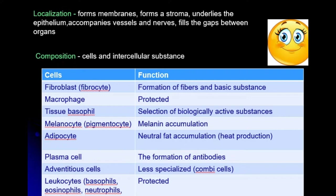Fixed cells are aboriginal cells — they originate here and spend their entire lifetime in the connective tissue, never migrating to other tissue types. They undergo differentiation and death here. They produce components for the extracellular matrix, such as fibroblasts. The function of fibroblasts is the formation of fibers and basic substance — meaning the ground substance of the extracellular matrix.